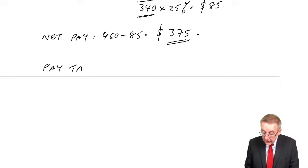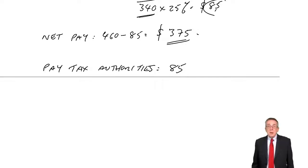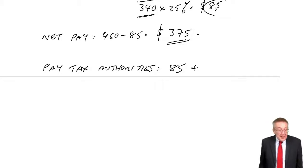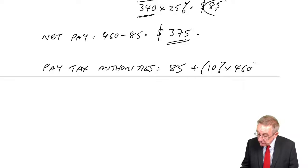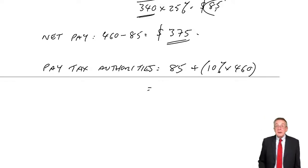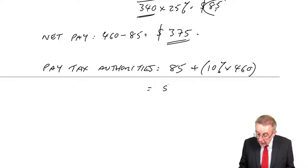Well, they'll pay the tax authorities two things. They'll pay the $85, which they'd taken out of the employee. So the employee suffers it, but the employer had taken it off their pay, and the employer will pay it over to the tax. In addition though, it says the employer, they have to pay tax themselves at 10% of the gross wages. The gross wages were $460. And so the total that the employer pays over is the $85, which they've taken from the employee, and 10% of the gross wages, the $46 that they're being charged.